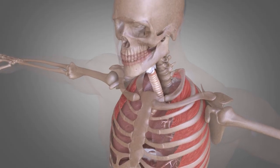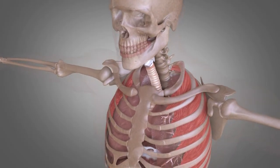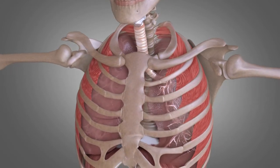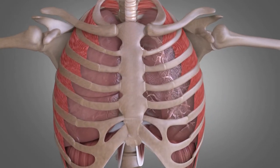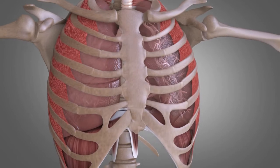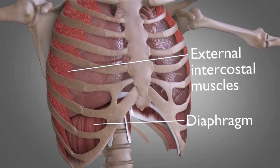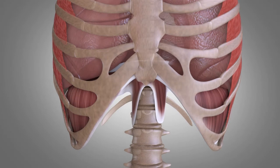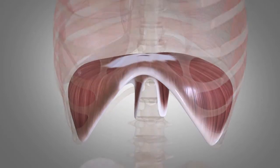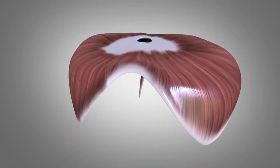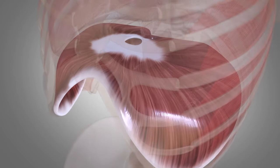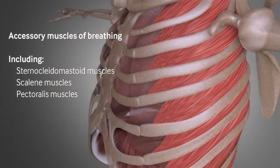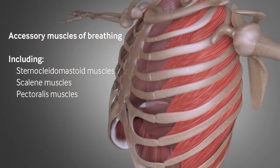Normal breathing relies on air moving into and out of the lungs through the respiratory system, driven by a pressure gradient created by the elastic forces for movement of the respiratory muscles of the chest wall and of the diaphragm. Most work is done by the diaphragm, though during exercise or respiratory distress, the muscles of the chest wall, the external intercostal muscles and accessory muscles of breathing also contribute.